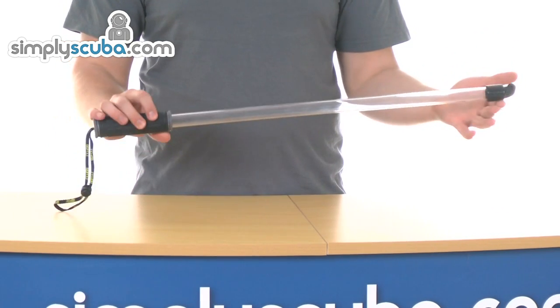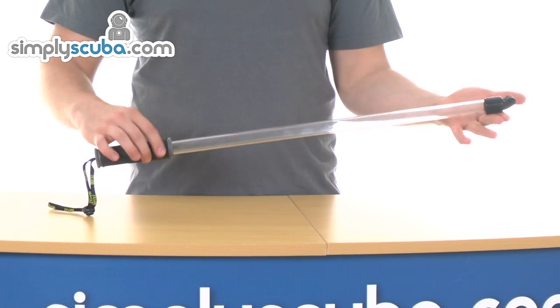Simply just mounts on top there and just gives you that freedom of movement that you want when you're trying to get awkward shots, the camera down into an awkward position.